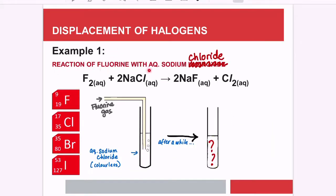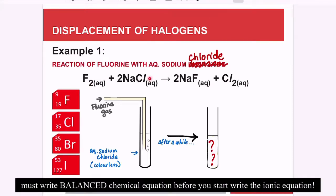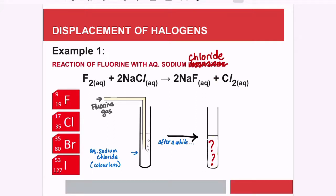Example one: the reaction of fluorine with aqueous sodium chloride. The balanced equation is F₂ + 2NaCl → 2NaF + Cl₂. In the reaction setup, fluorine gas, which is a pale yellow gas, is passed into the aqueous sodium chloride solution, which is a colorless solution.